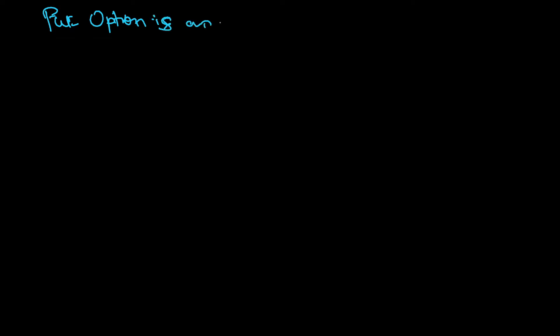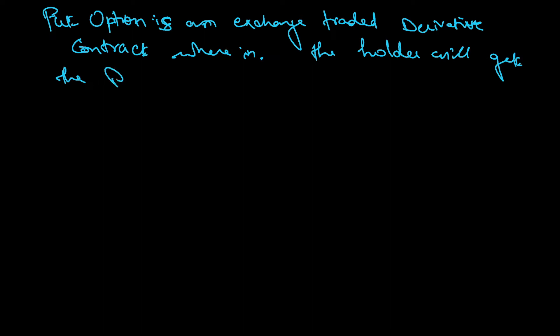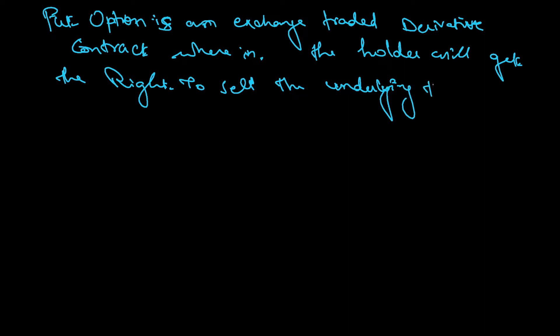A put option is an exchange-traded derivative contract wherein the holder will get the right to sell the underlying asset on the expiry date at the agreed price.